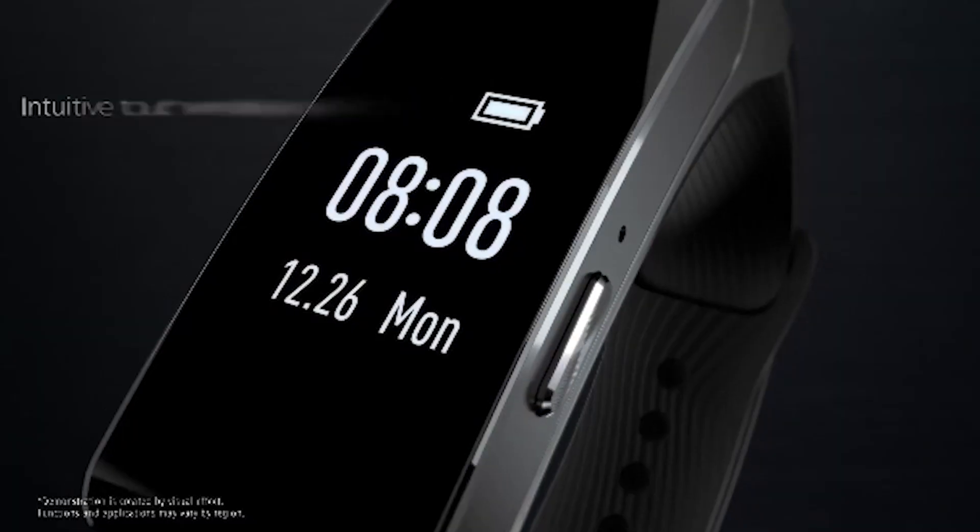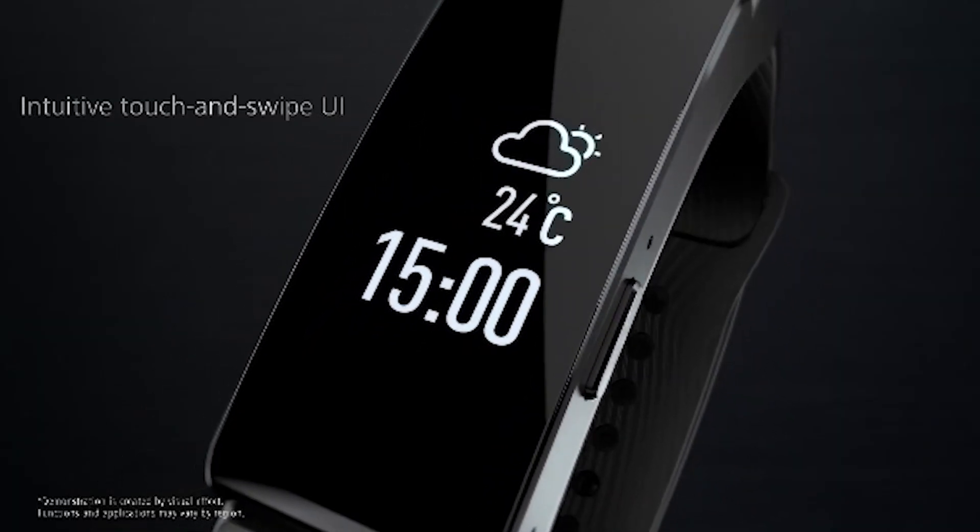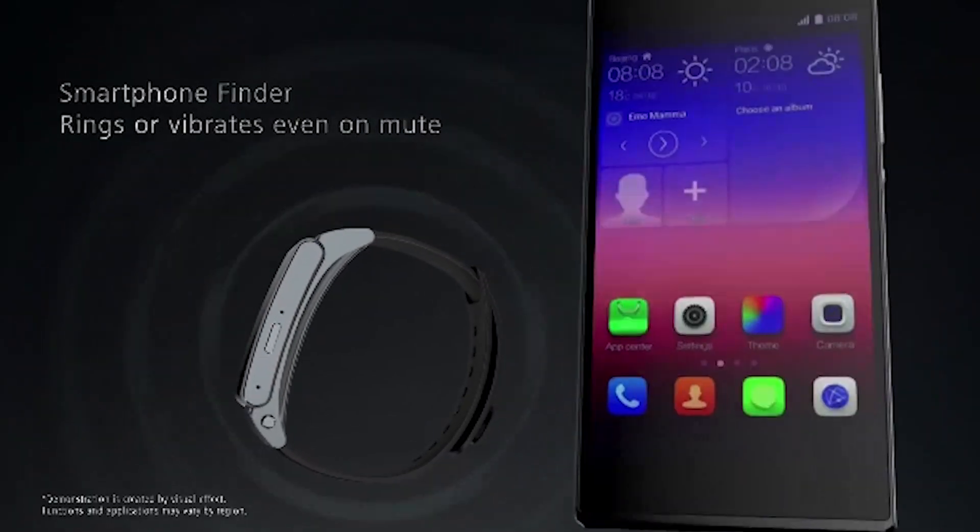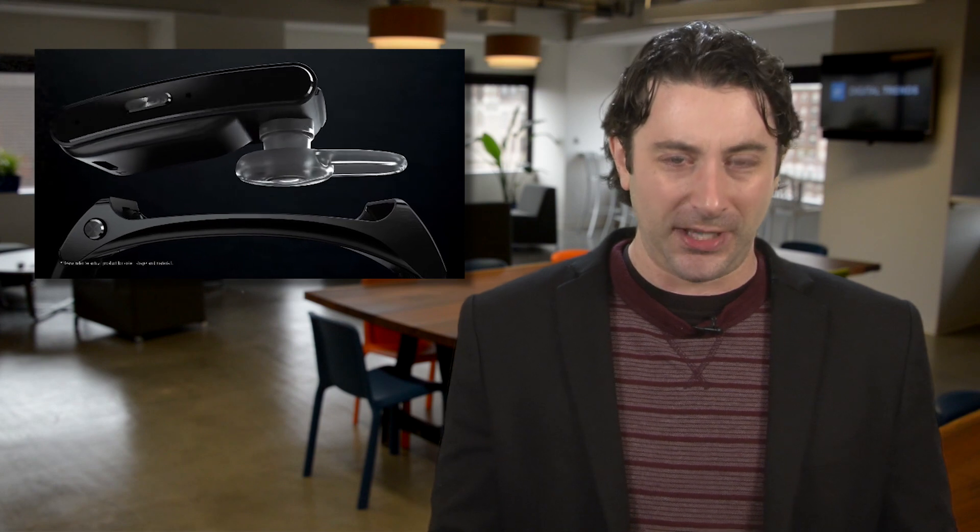In watch mode, the TalkBand looks sort of like a swank fitness band and sports a small screen that shows the time, notifications, and tracks fitness data through an app. But the really neat trick is that you can pop the device out of the band and into your ear, which makes it slightly less geeky than talking into your smartwatch like Dick Tracy. And as Bluetooth ear things go, it's not too nerdy.